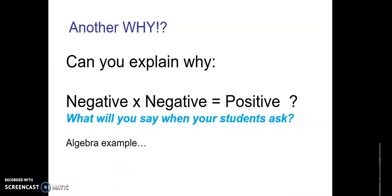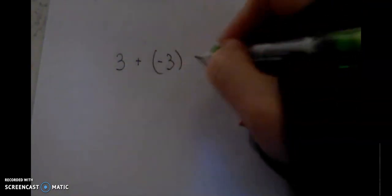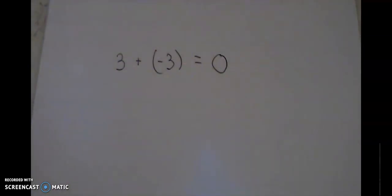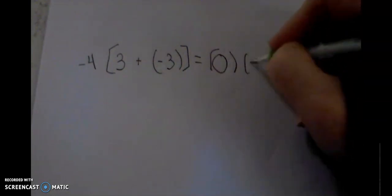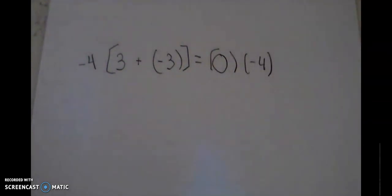I'm going to show you one way that I think is pretty cool with algebra. All right, to do this we're going to start with a true statement that we can accept: 3 plus negative 3 equals zero. We can accept that that is true. Now I'm going to manipulate this by multiplying both sides by negative 4. If I multiply this side by negative 4, I have to do the same thing on both sides.